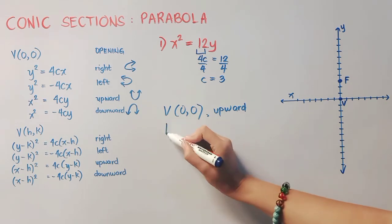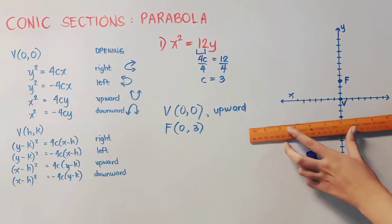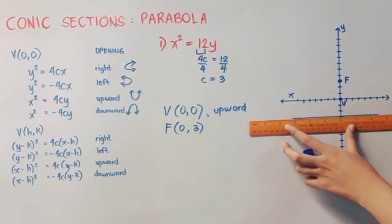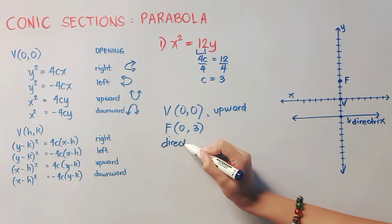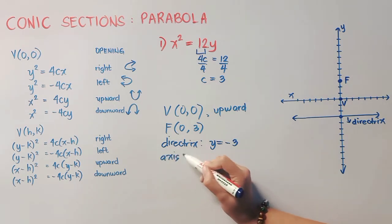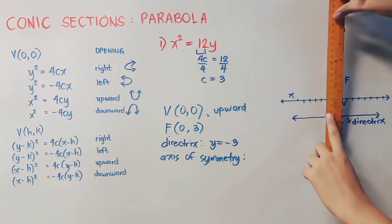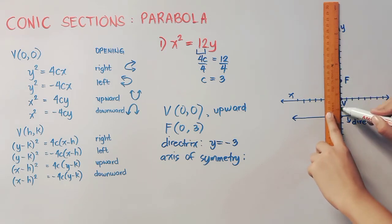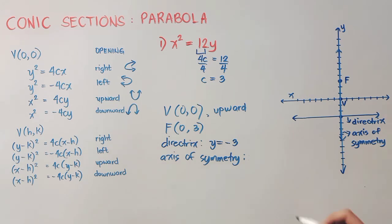The focus is at (0, 3). We will use c again to get our directrix, going 3 units downward from the vertex. Since the directrix is a line, we place a horizontal line 3 units below the vertex. This line hits y = −3, so the equation of the directrix is y = −3. Our axis of symmetry is the line containing the focus and vertex, perpendicular to the directrix, hitting x = 0. Therefore, the equation is x = 0.